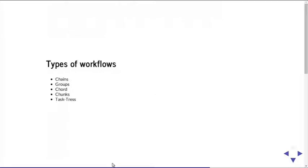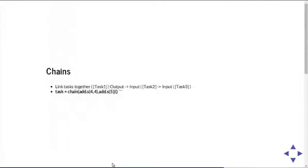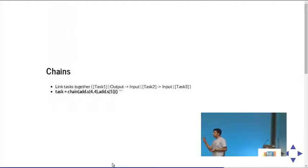Coming to workflows: Celery comes with Canvas, which lets you design workflows. You have chains — linking tasks together where the output of one becomes the input of the next. For example, add(4, 4) chained with add(5) will compute 4+4=8 and then add 5 to get 13. You can also use groups to fire tasks in parallel without waiting for any to finish — add.s(2,2) and add.s(4,4) will fire simultaneously.